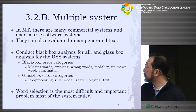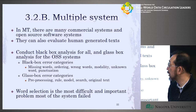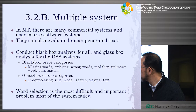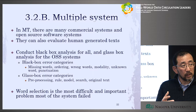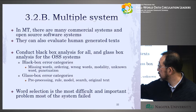They do black box analysis. In short, it analyzes only the input and output, without necessarily understanding the algorithm inside — it's a black box. They found errors including missing words (some words not translated), incorrect word ordering in the target language, using the wrong words, modality errors, unknown words, and punctuation errors. These are the black box errors.